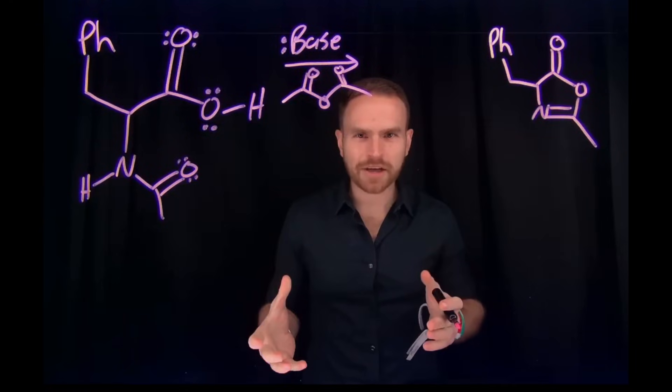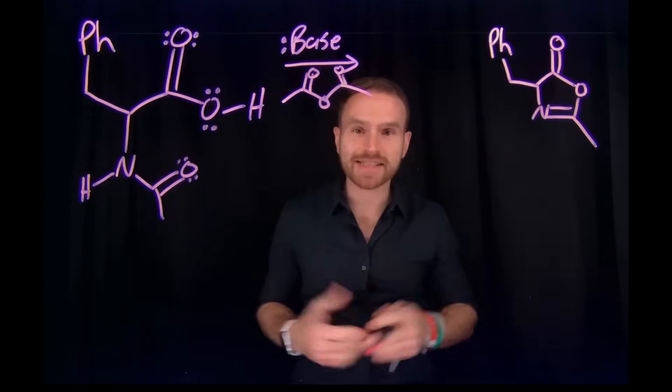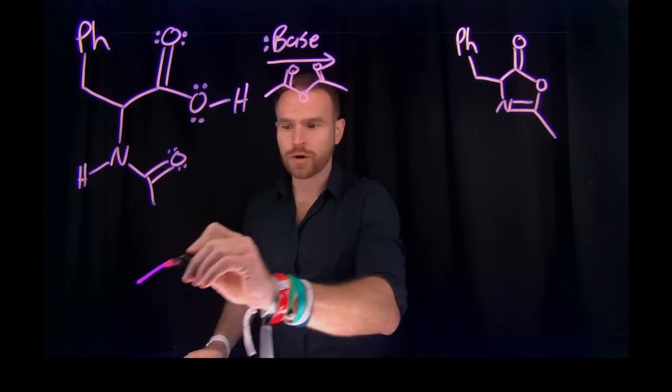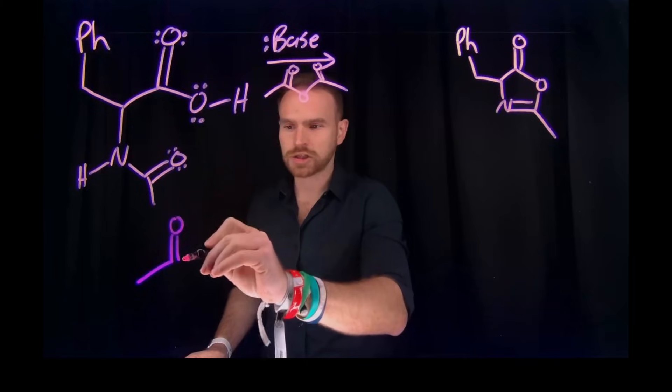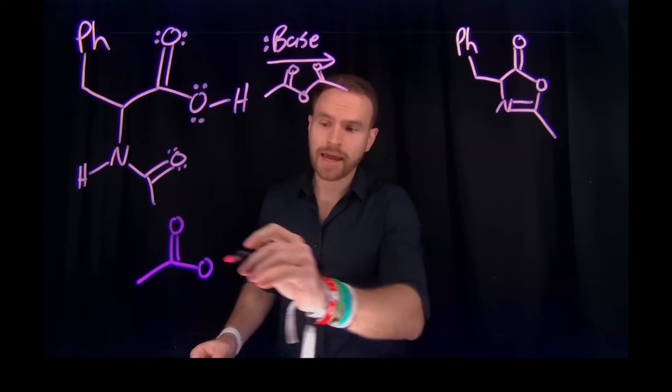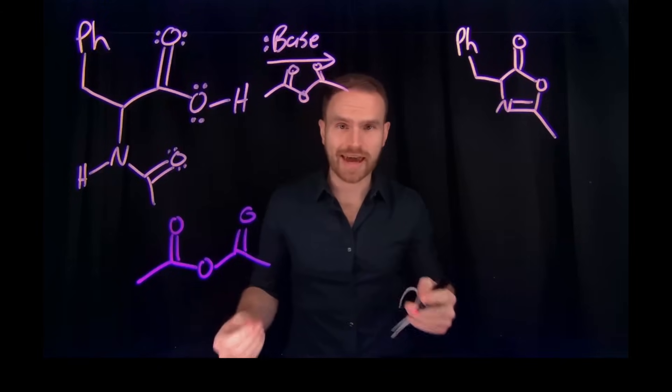One of the key things to understand in this mechanism is going to be to notice that one of the reactants is this acetic anhydride. An anhydride is actually a carboxylic acid derivative where you have a carbon to oxygen double bond, and that carbon is also bound to another hetero atom in the form of this oxygen, and therefore this makes it a carboxylic acid derivative.